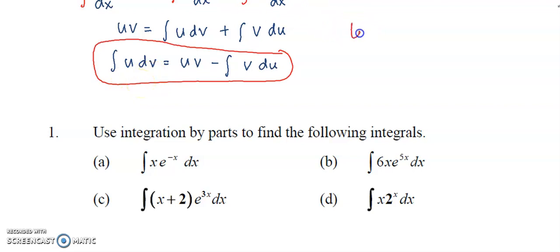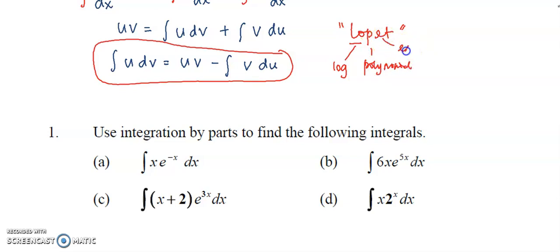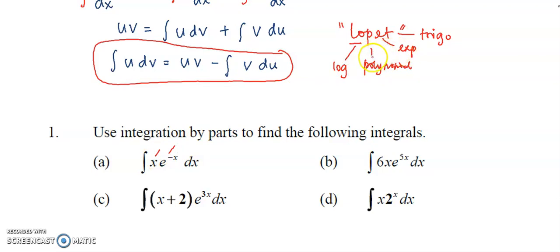I will show you a guide for setting which one to be u and which one to be dv. Here is the word LOPET. L stands for logarithm, P stands for polynomial, E stands for exponential, and T stands for trigonometric function. This means if I have x times e to the negative x dx, polynomial comes before exponential in LOPET, so the polynomial has priority to become u.